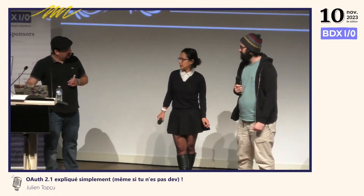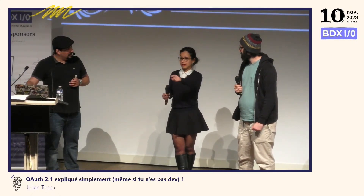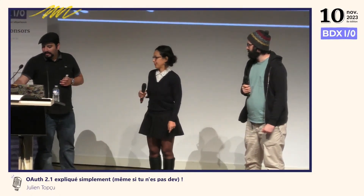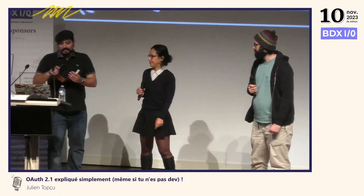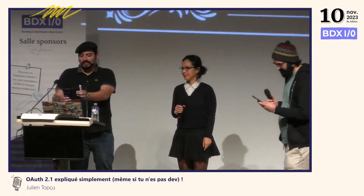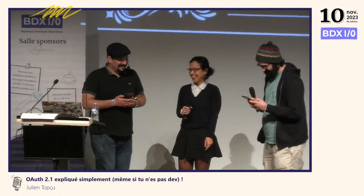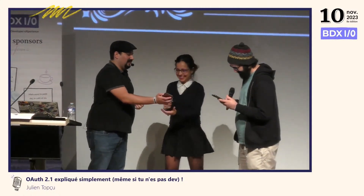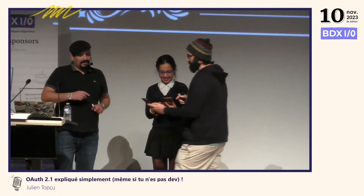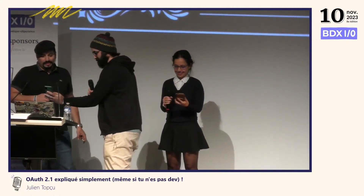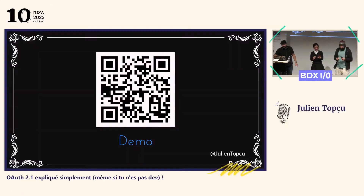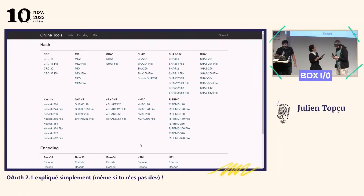On va complètement changer ça. Je vais te demander de scanner un QR code. Je vais te montrer ce qu'il voit — c'est un site qui liste plein de fonctions de hachage. Ce que je vais te demander, c'est que quand tu m'appelles pour me demander si Dimitri a un compte, c'est de me donner deux informations en plus. J'ai besoin que tu choisisses une fonction de hachage.